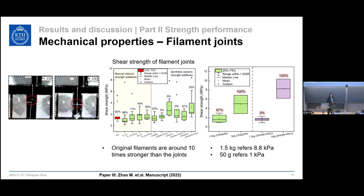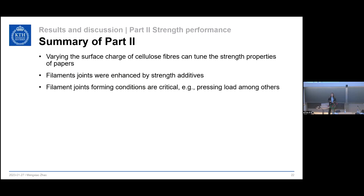Summary of Part Two: varying the sulfate charge of cellulose fibers can be used to tune the strength properties of paper — the higher the sulfate charge, the more strength additives you can add, giving a stronger paper. Filament joints were enhanced by strength additives, but we noticed that filament joint forming conditions, such as pressing load, are very critical.